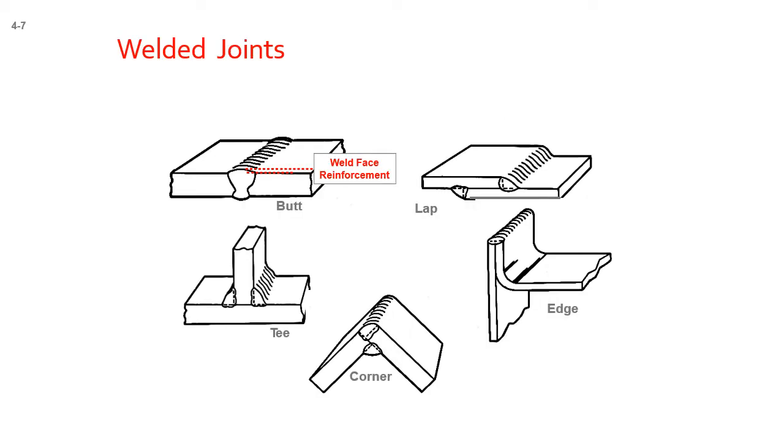Here's the joint type and some examples. We're going to go through these in a little more detail, but you've got a butt joint, a lap joint, an edge joint, a corner joint, and a T joint. We're going to look at these examples in a little more detail in the following slides.